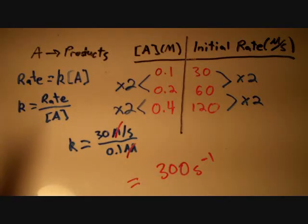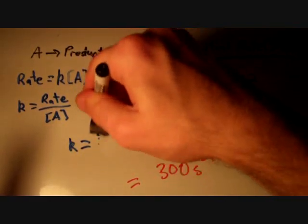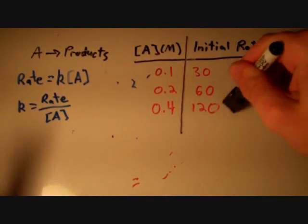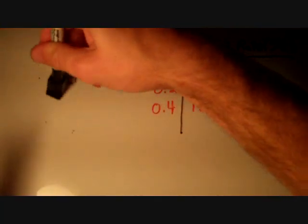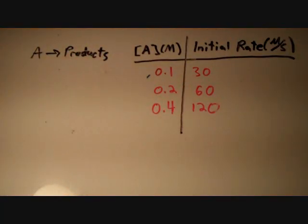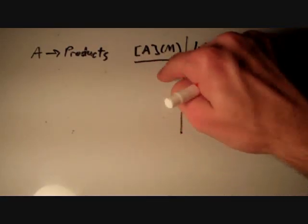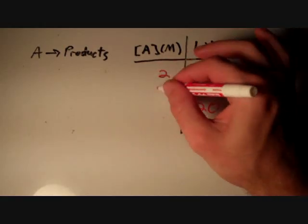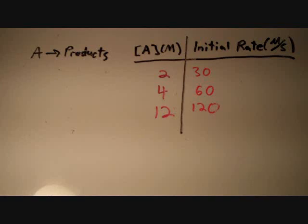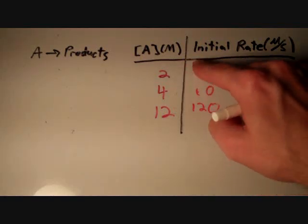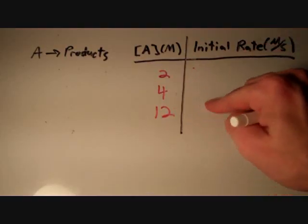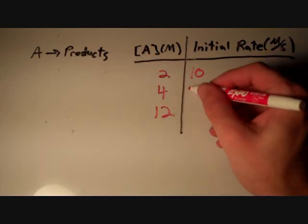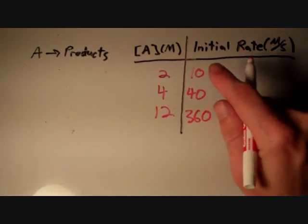Before ending, let's look at a couple of other possibilities for what these numbers could be doing and how we would determine the rate law if the numbers were different. Suppose instead of 0.1, 0.2, and 0.4 molar, we had concentrations of 2, 4, and 12 molar, and instead of 30, 60, and 120 molar per second, we have initial rates of 10, 40, and 360 molar per second.